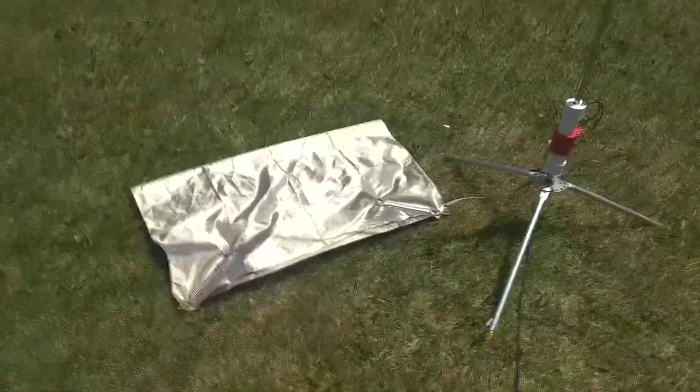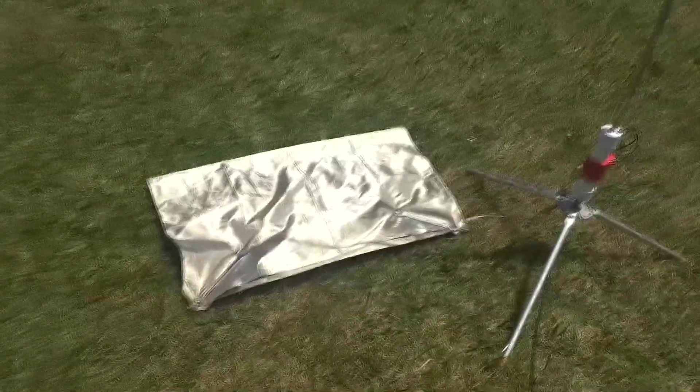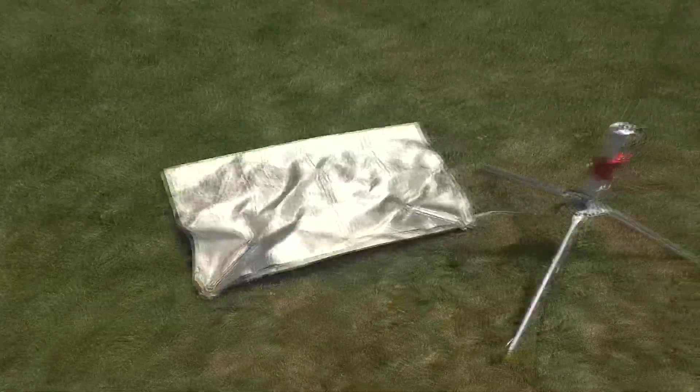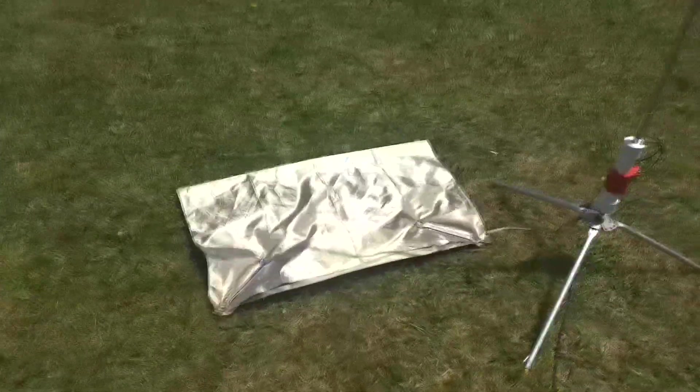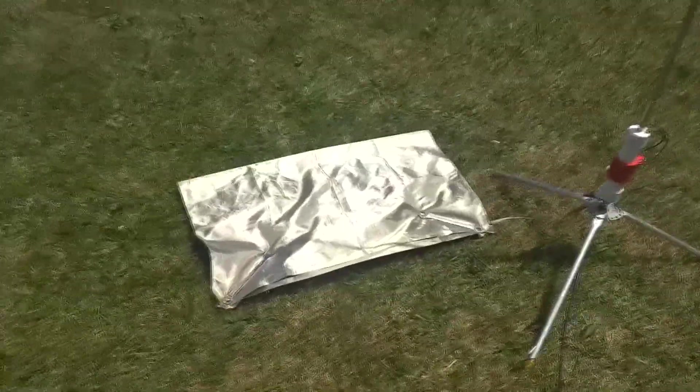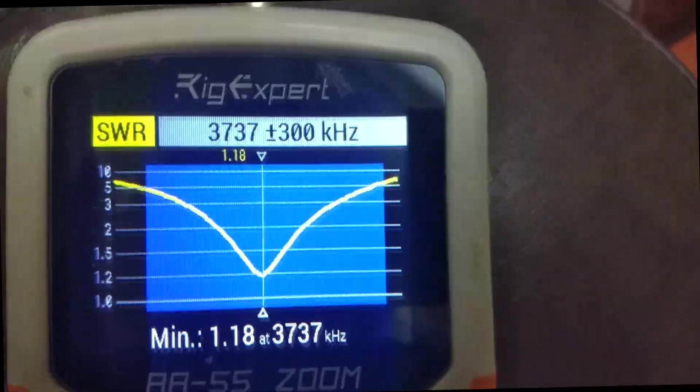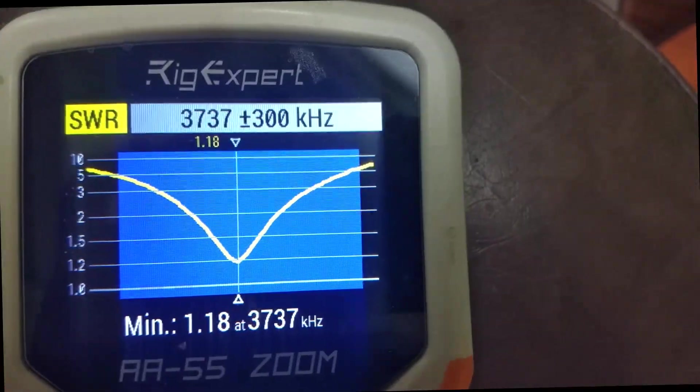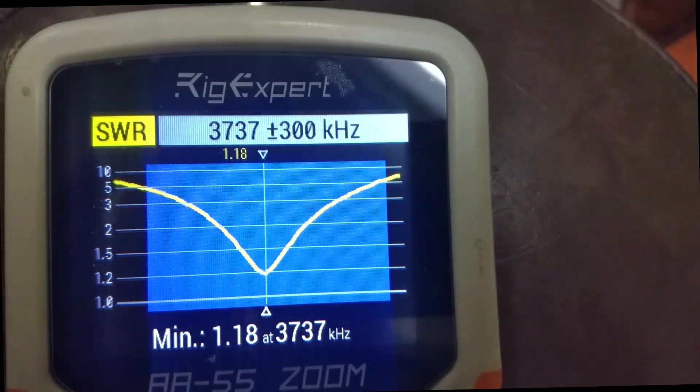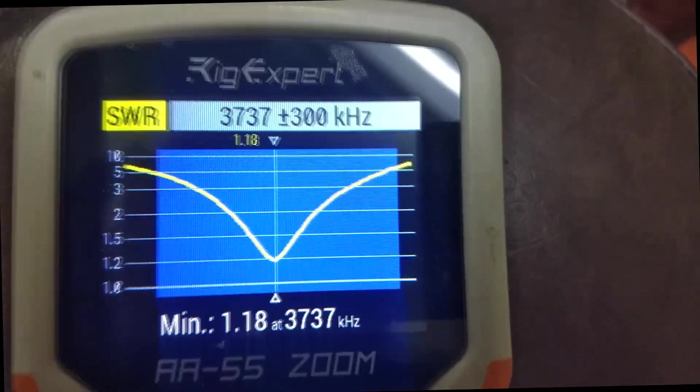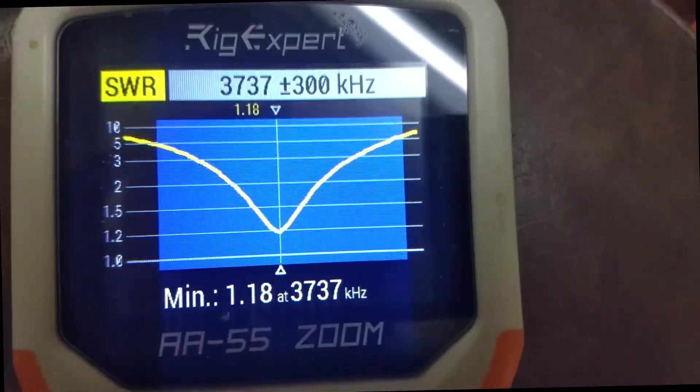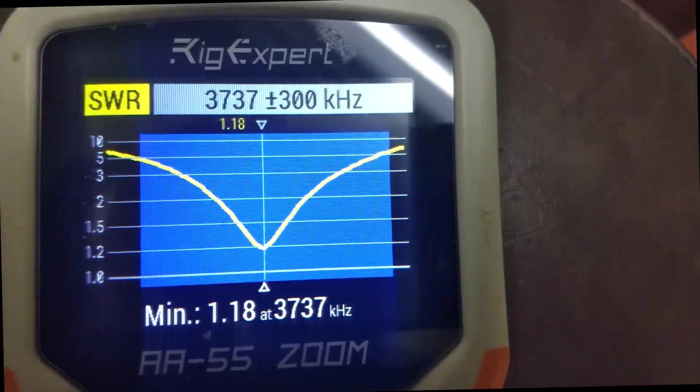So next I folded the Faraday fabric in half, which would give an area of about 5.4 square feet. Here's the curve with the Faraday fabric folded in half, and again the SWR went even lower with one half the area.